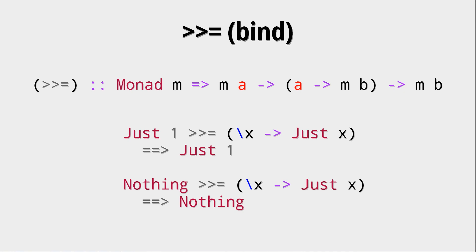Now, this seems weird — why is that the case? Well, a Nothing doesn't have an internal value. And of course it depends on how you define this bind operator, but since a Nothing encapsulates some error state very often — it encapsulates that you have nothing in your hands — then it shouldn't return anything but a Nothing.